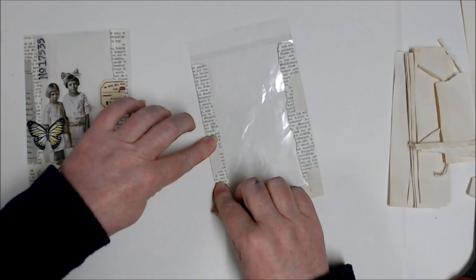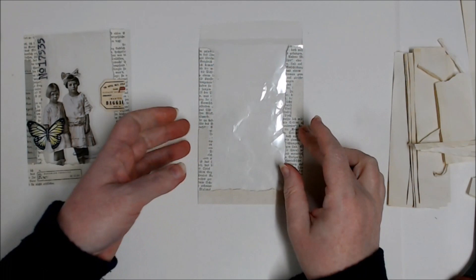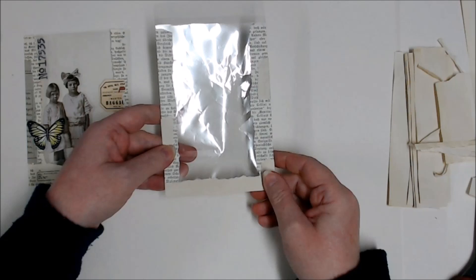Put that one down there. Now if you do get glue on your cellophane bag, you can just carefully wipe it off with a baby wipe or something like that.